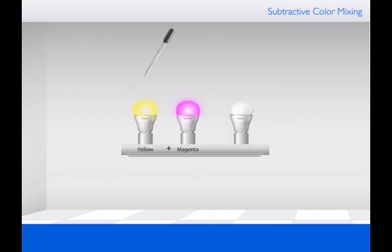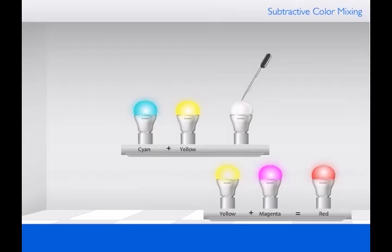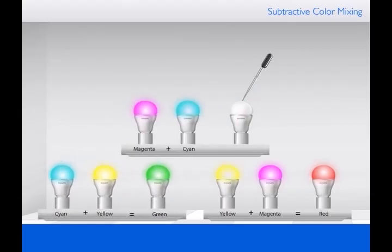The subtractive mixing of two complementary colors will again produce a primary color. Thus, yellow and magenta make red. Yellow and cyan make green. Magenta and cyan make blue.